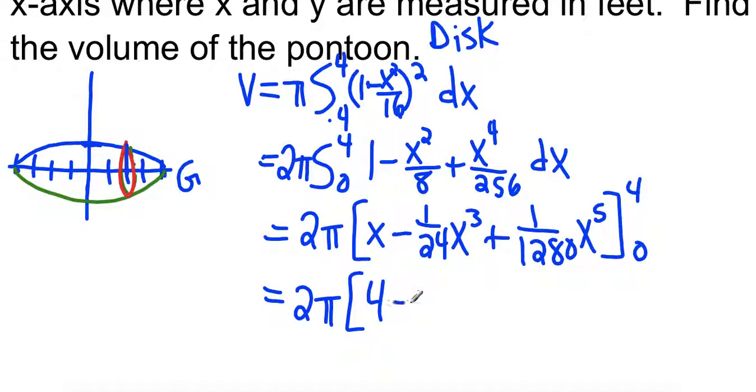That gives me 4 minus... I'm not even going to pretend to not use a calculator on that. Let's see, 4 to the 3rd is 64. So 64/24th is going to be 8/3rds. And then 4 to the 5th is 1024, 1280, so 4/5ths.